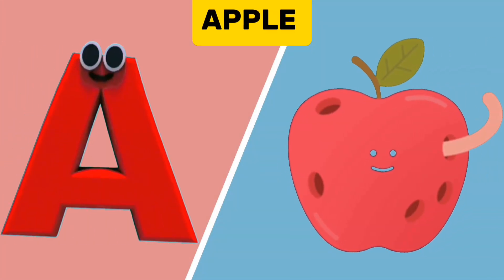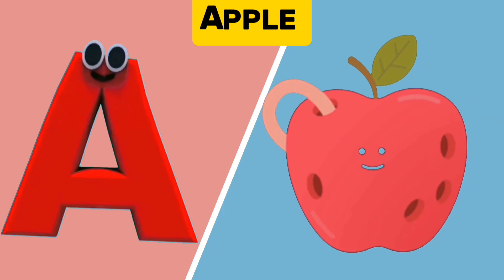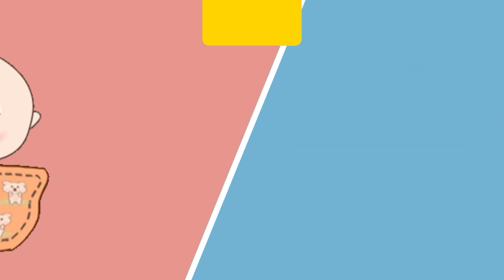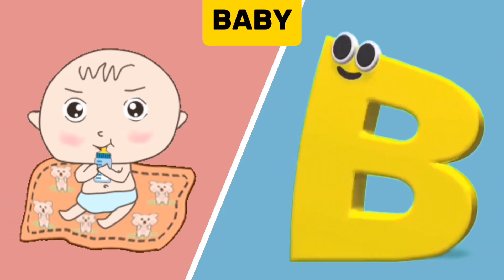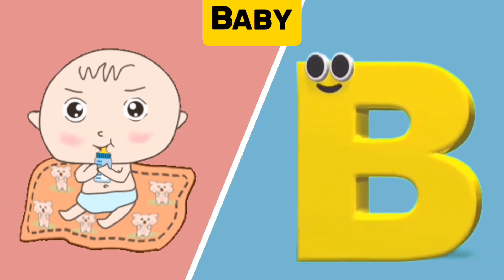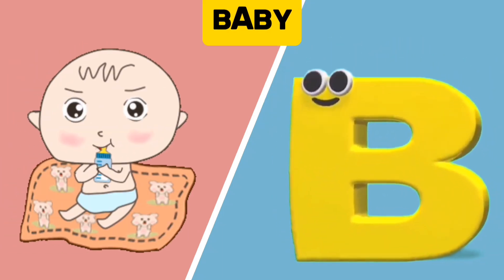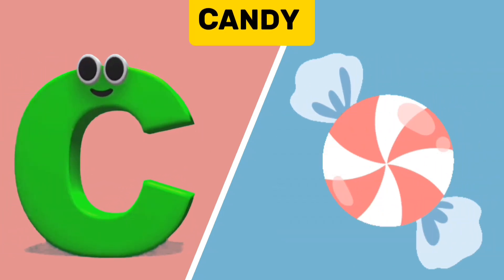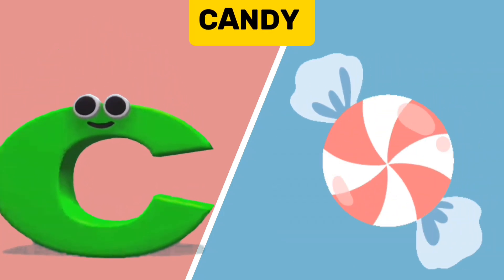A is for Apple. A, A. Apple. B is for Baby. B, B. Baby. C is for Candy. C, C. Candy.